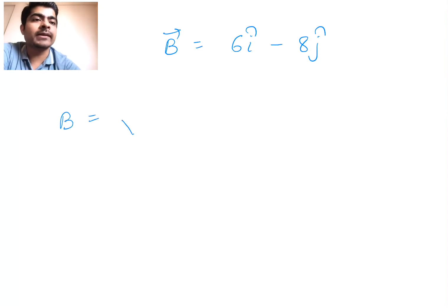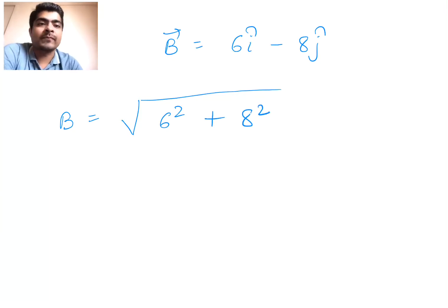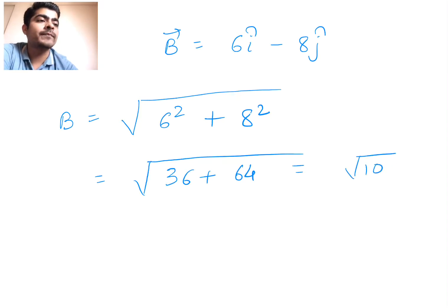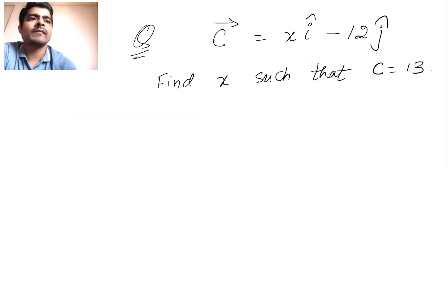So it's very simple. B will be equal to root of 6 squared. Now there's a minus sign, but when you are squaring it, the minus sign doesn't matter anymore. So you could simply write down 6 squared plus 8 squared. So this will give you under root of 36 plus 8 times 8 will be 64, so that will be root of 100. So b will be equal to 10. So this vector has magnitude 10.